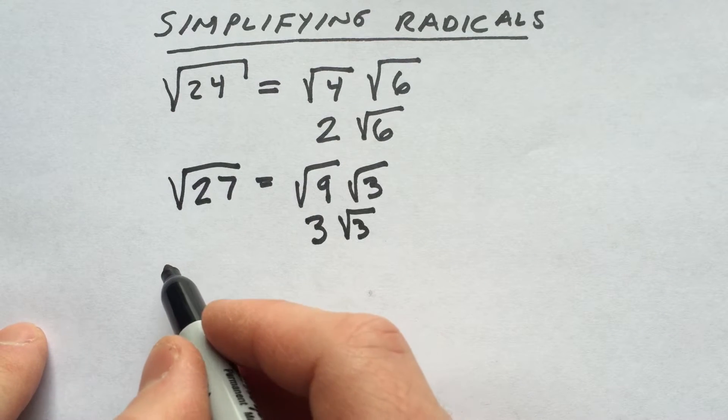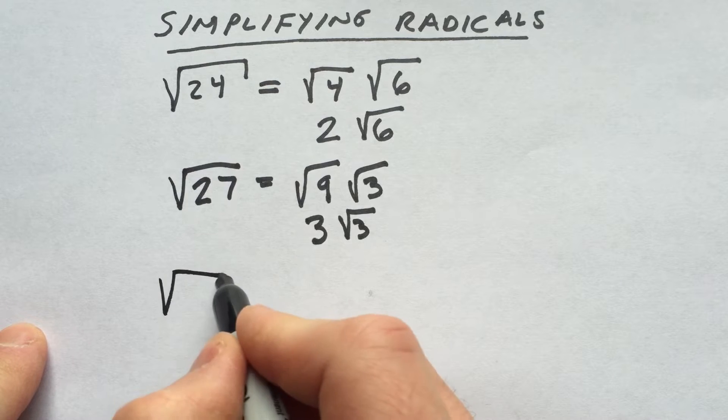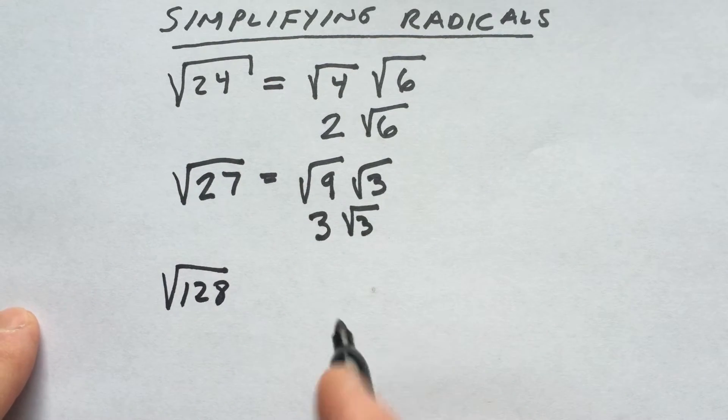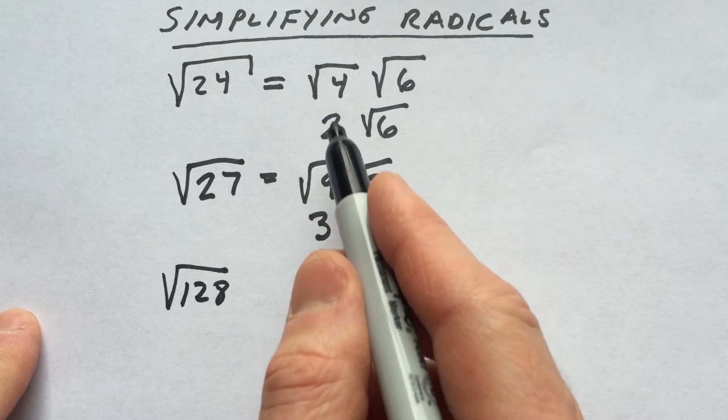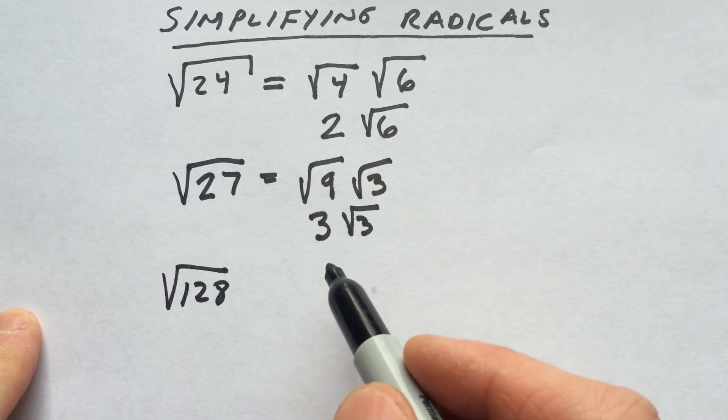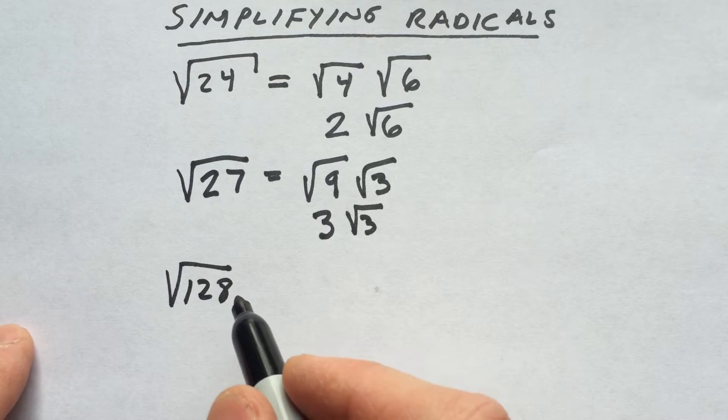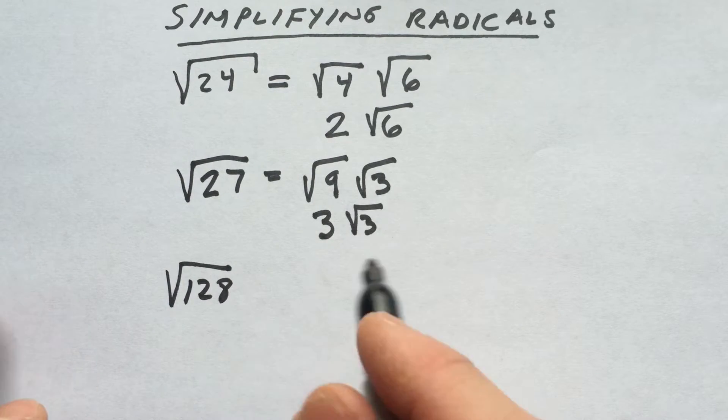Let's take, for example, a larger one. Say we have the square root of 128. So how do we simplify the square root of 128? Well, we can divide out perfect squares like we were doing here, like 4, 9, 16, 25, and that's fine, but sometimes when the numbers get a little bit larger, what you might want to do is do a prime factorization tree.